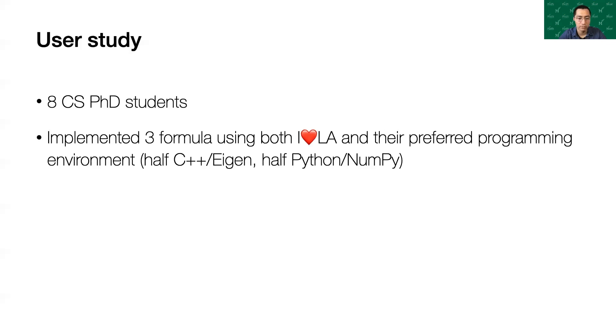In our experiment, participants implemented three progressively more difficult linear algebra formulas, in both I❤LA and their preferred programming environment. Four used C++ with Eigen, and four used Python with NumPy, SciPy. We balanced the experimental conditions, so that half of the participants implemented all three formulas using I❤LA first, and half using their preferred environment first.